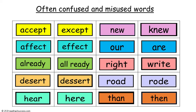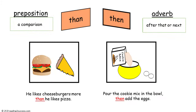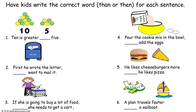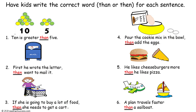Our tenth pair of often confused and misused words are than and then. Than, spelled T-H-A-N, is a preposition that makes a comparison, as in 'he likes cheeseburgers more than he likes pizza.' The second word, then, spelled T-H-E-N, is an adverb meaning after that or next, as in 'pour the cookie mix in the bowl, then add the eggs.' Have kids write the correct word — than (T-H-A-N) or then (T-H-E-N) — for each sentence.